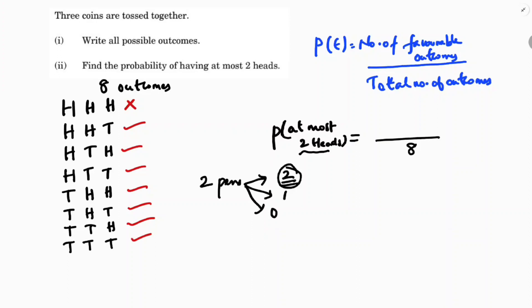So total favorable outcomes are seven. Therefore, the probability of at most two heads is seven by eight.